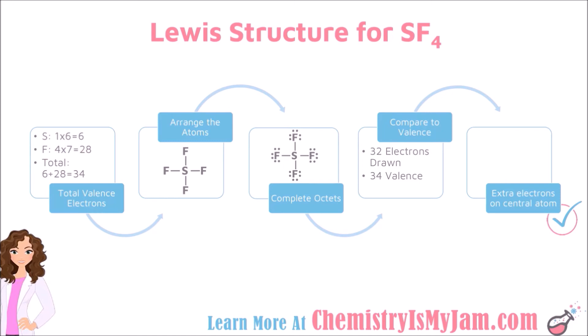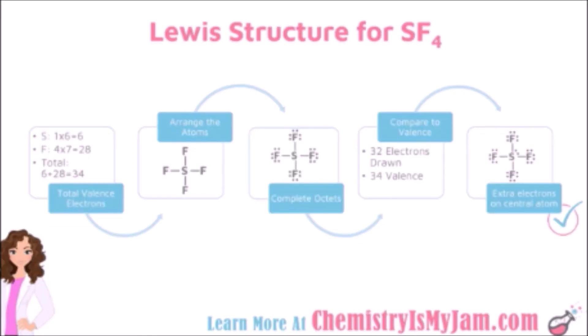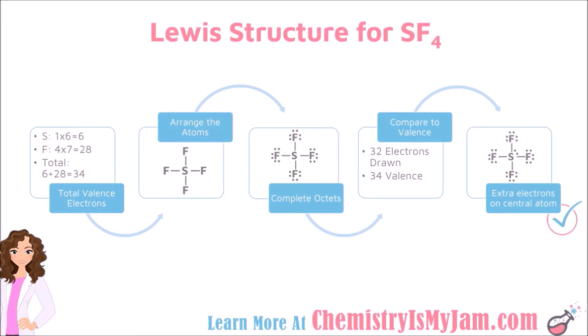Our rules tell us that those electrons should go on the central atom. And those rules are in the description if you need them. So we are going to add the extra electrons to the central atom. It looks a little strange, but this is what the Lewis structure for this structure should look like. The last thing you want to do is ask yourself, is it okay for sulfur to have more than 8 electrons? And it is, because sulfur is in period 3 or below, so it is perfectly fine for sulfur to have an expanded octet. This is an appropriate Lewis structure for sulfur tetrafluoride.